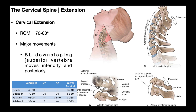In extension, the posterior tubercle of the atlas and all of the spinous processes are not separating — they're coming closer together. We have a term for that: approximation. Whenever the spinous processes come closer together in any part of the spine, that's referred to as approximation. You can imagine what that does to the ligamentum nuchae or nuchal ligament: it puts it in laxity. Whereas in flexion, when the spinous processes separated, it was in tension.